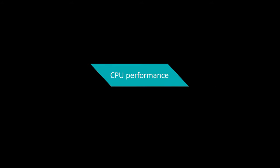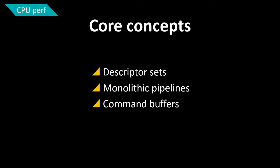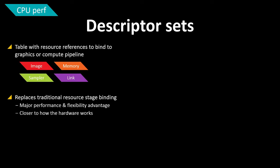This brings me to CPU performance and how it relates to Mantle. There are three key concepts: descriptor sets, monolithic pipelines, and command buffers. Descriptor sets are how you tell the GPU which resources to use. In the traditional model, resources are bound one-to-one, rebinding textures to individual shader stages. Mantle replaces this with a large resource table of simple resources: images — textures, UAVs, or anything image-like — memory, which covers buffers or raw views, samplers, and links between resources.